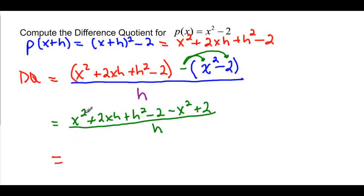Let's simplify. x squared and negative x squared cancel each other out. I have a 2xh and no other xh's, so I need that one. I have an h squared but no other h's, so plus h squared. And then negative 2 and positive 2 cancel each other out. So I really just have 2xh plus h squared over h.